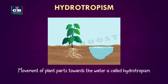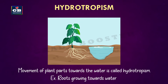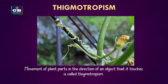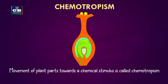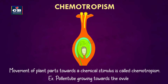Movement of plant parts towards water is called hydrotropism. Example: roots growing towards water. Movement of plant parts in the direction of an object that it touches is called thigmotropism. Example: tendrils coiling around a support. Movement of plant parts towards a chemical stimulus is called chemotropism. Example: pollen tube growing towards the ovule.